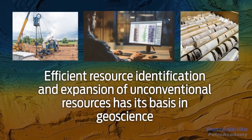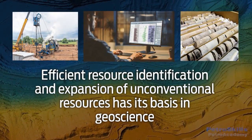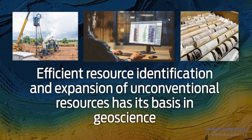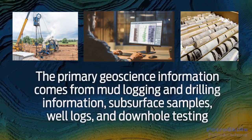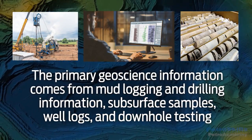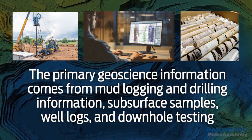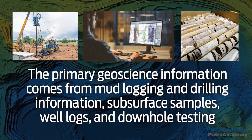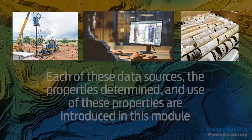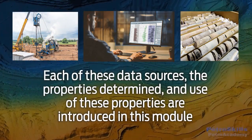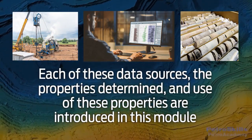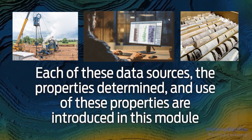Efficient resource identification and expansion of unconventional resources has its basis in geoscience. The primary geoscience information comes from mud logging and drilling information, subsurface samples, well logs, and downhole testing. Each of these data sources, the properties determined, and use of these properties are introduced in this module.